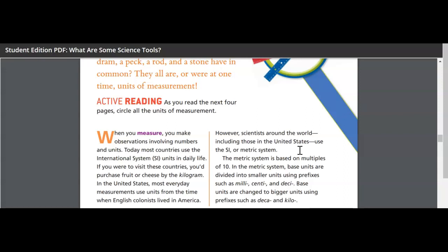In the metric system, base units are divided into smaller units using prefixes such as milli, centi, and deci. So millimeter, centimeter, decimeter. You guys are familiar with that. Base units are changed to bigger units using prefixes such as deca and kilo. So you have a decagram or a decameter and a kilogram or a kilometer.